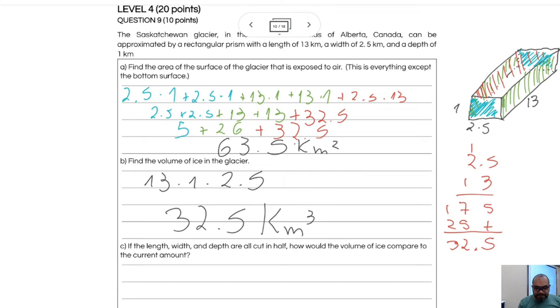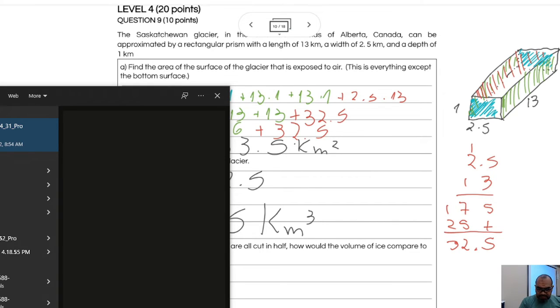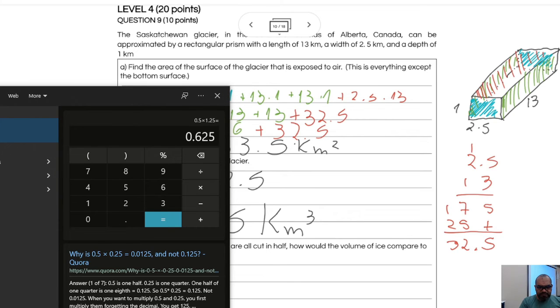If the length, width, and depth are all cut in a half, if I divide by two the sides, okay? Now let's draw the new prism, half of this. New prism, it is 1, 2.5, and oh no, the half, sorry. 5, 1.25, half of 13, 6.5. What is the new volume? Well, let's multiply then. It's 0.5, 1.25 times 6.5, which is 4.0625. It is 4.0625.